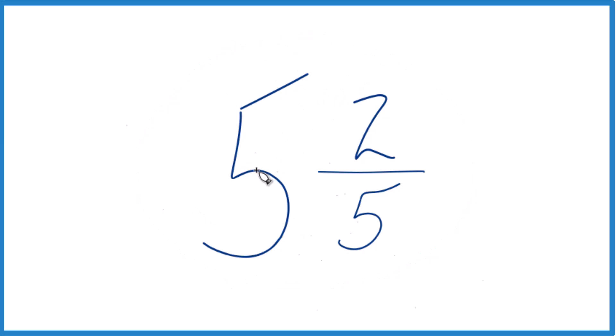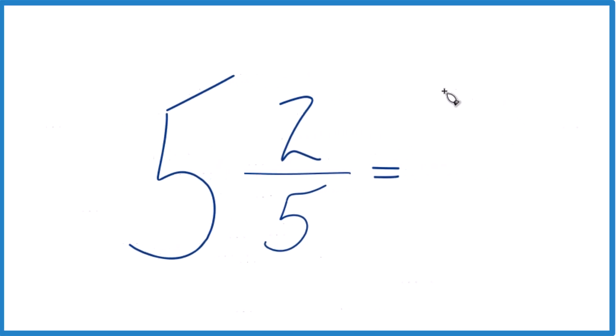You take the whole number, the 5. 5 times 5, that's 25, and then you add it to 2. So 25 plus 2, that equals 27.